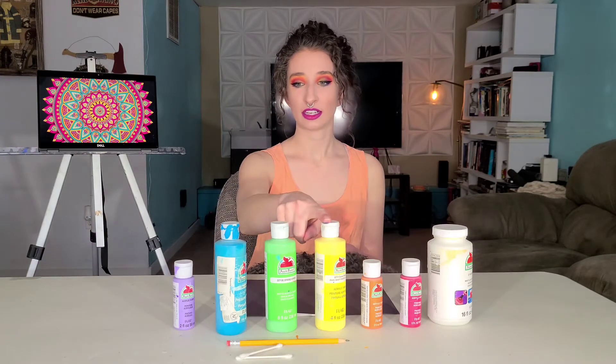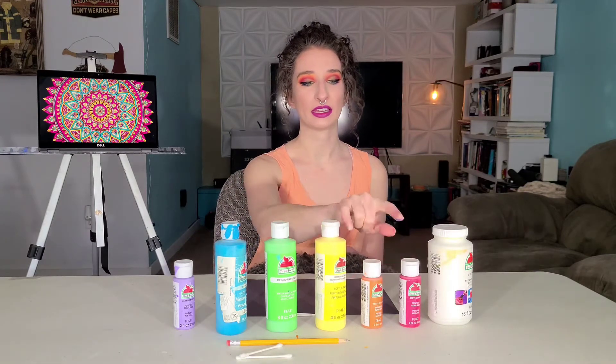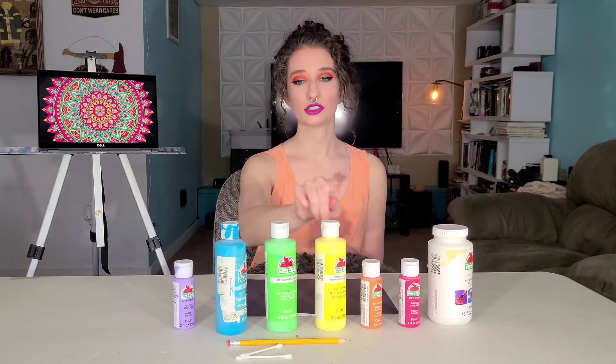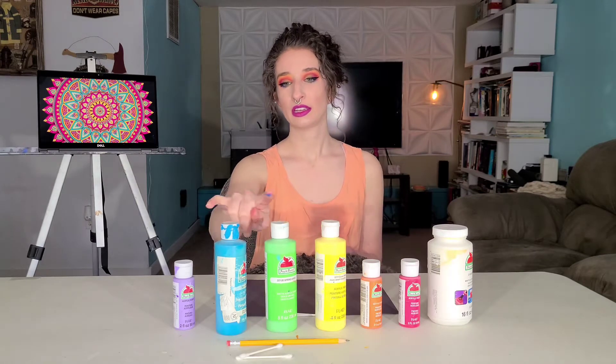Every other one is a primary color. So we have our red, our yellow, and our blue. And then the colors in between them are the secondary colors that the two primaries make. So red and yellow make orange, yellow and blue make green, and then blue and red make purple.